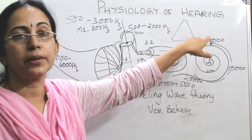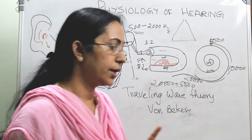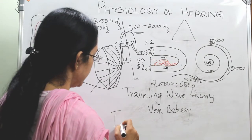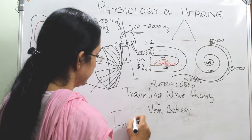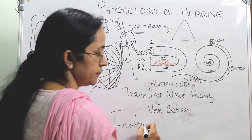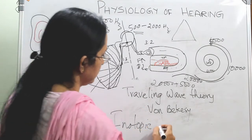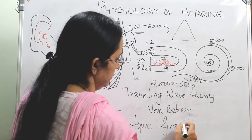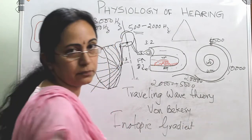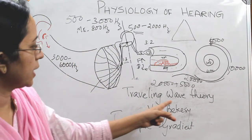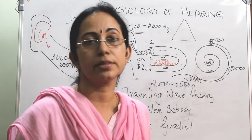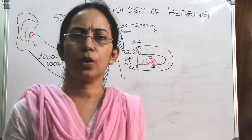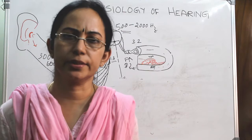This mapping of frequencies across the cochlea is called the tonotopic gradient in the cochlea. This is an important concept that can be asked in exams. All these mechanisms together excite the auditory nerve.